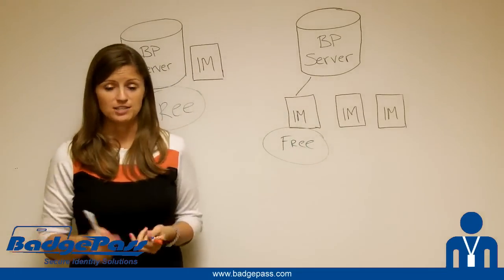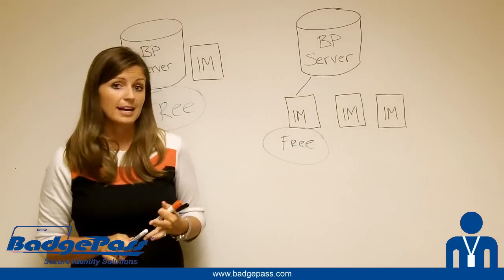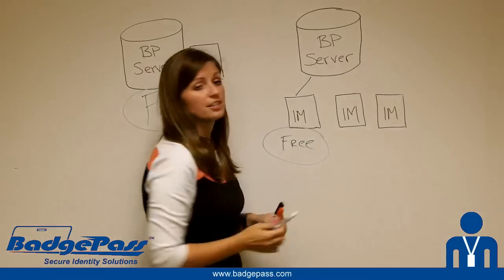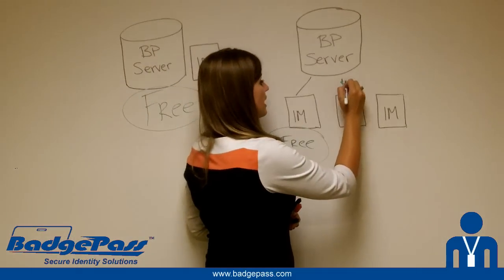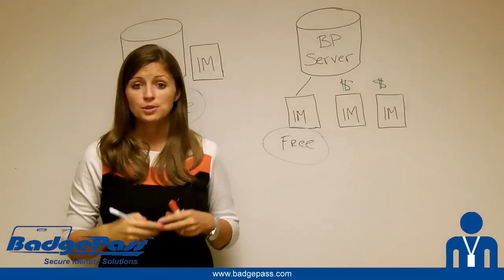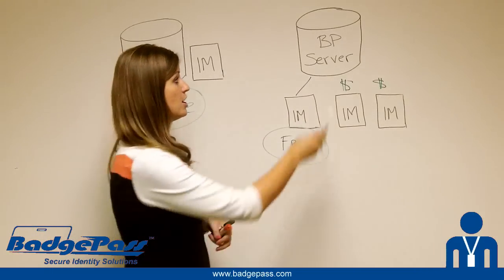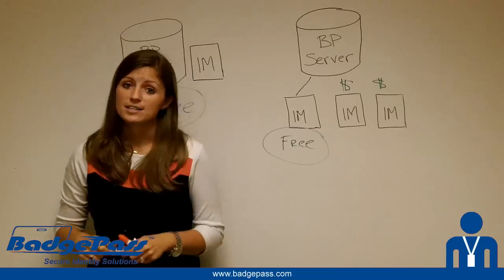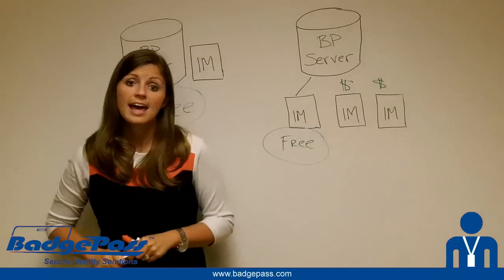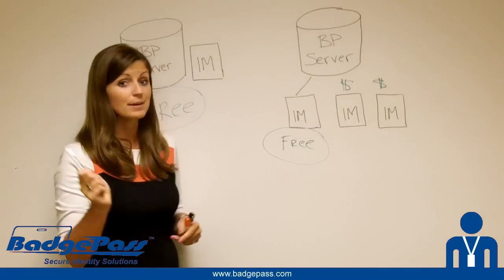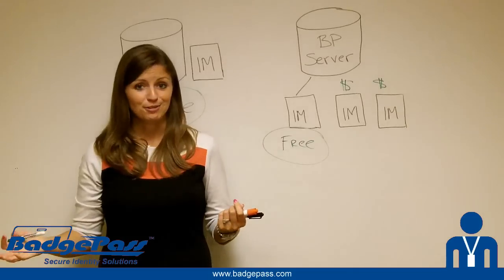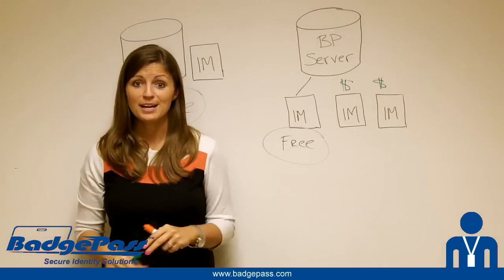Think about how many places your customer wants to enroll people or print badges from. Any place that they want to do that, they're just going to add an Identity Manager device license. It's going to cost them a little bit extra money but not a big deal. When you're building your quote, you're going to need BadgePass Server software, BadgePass Server SMA, and then the number of Identity Manager device licenses and Identity Manager SMAs that they will need — keeping in mind that every time you buy BadgePass Server, you're getting one Identity Manager device license absolutely free. And that's how you quote BadgePass Identity Manager.